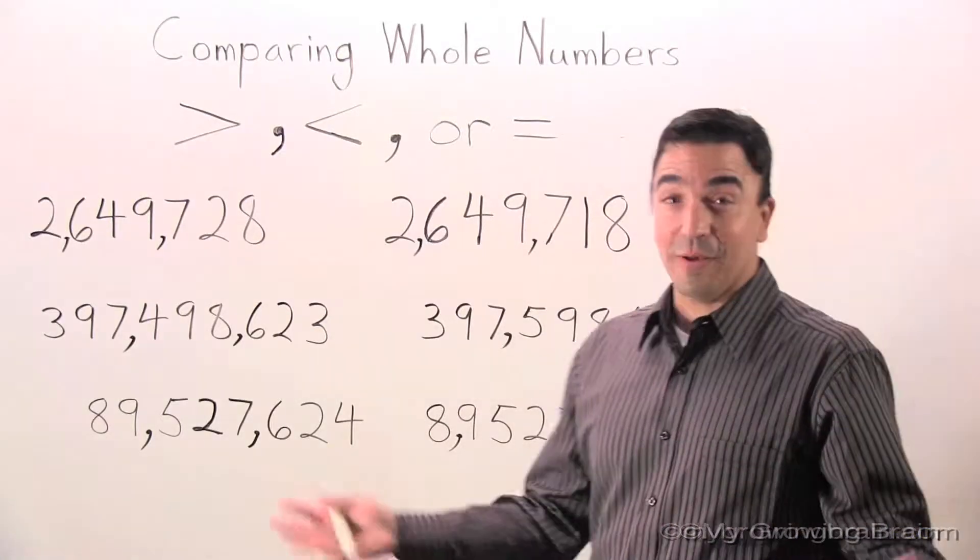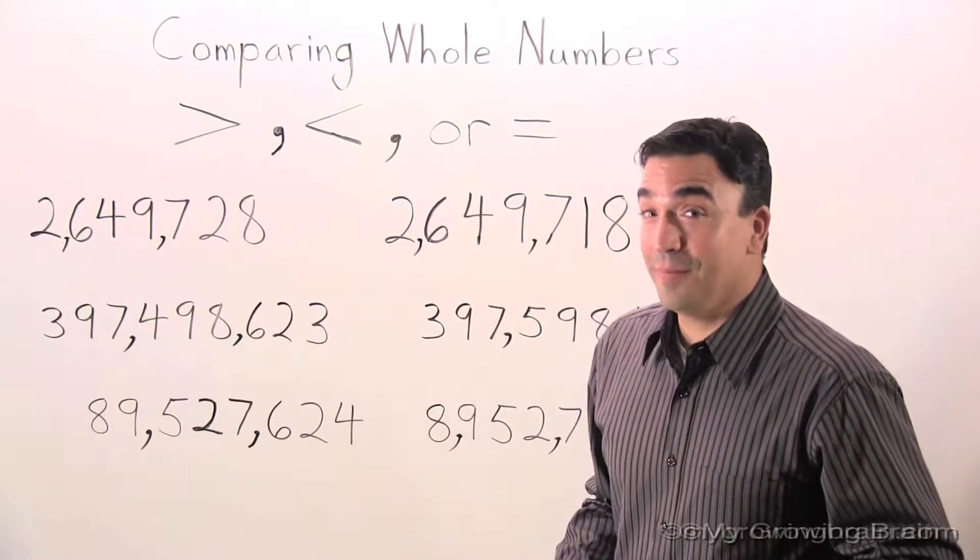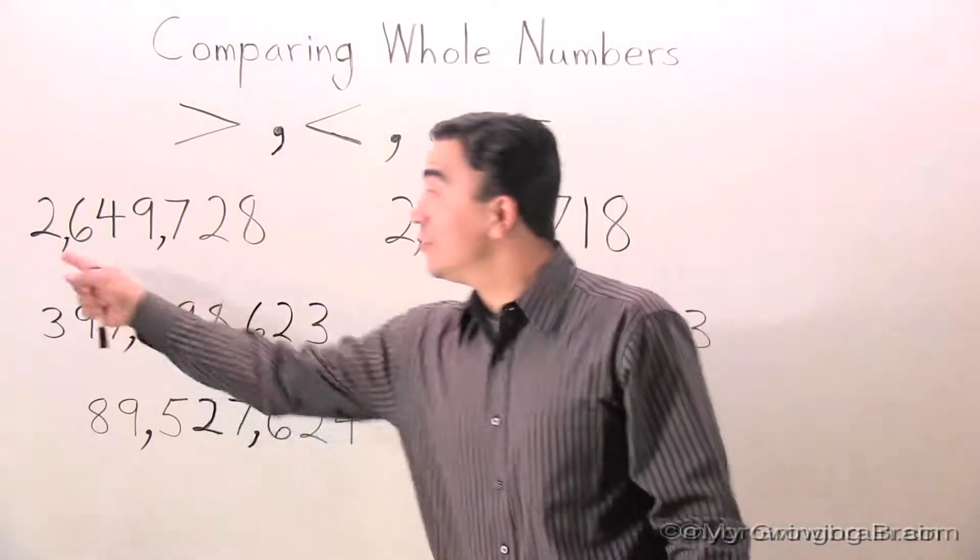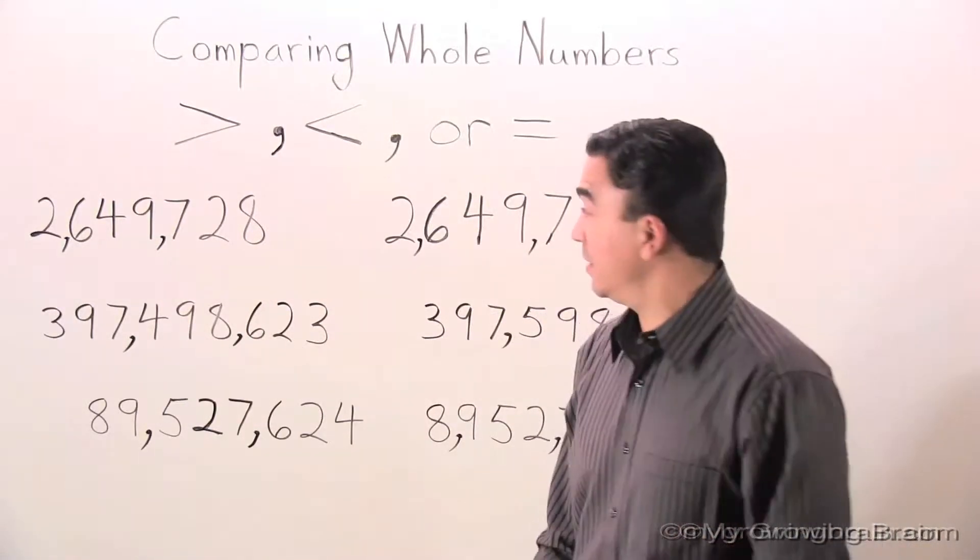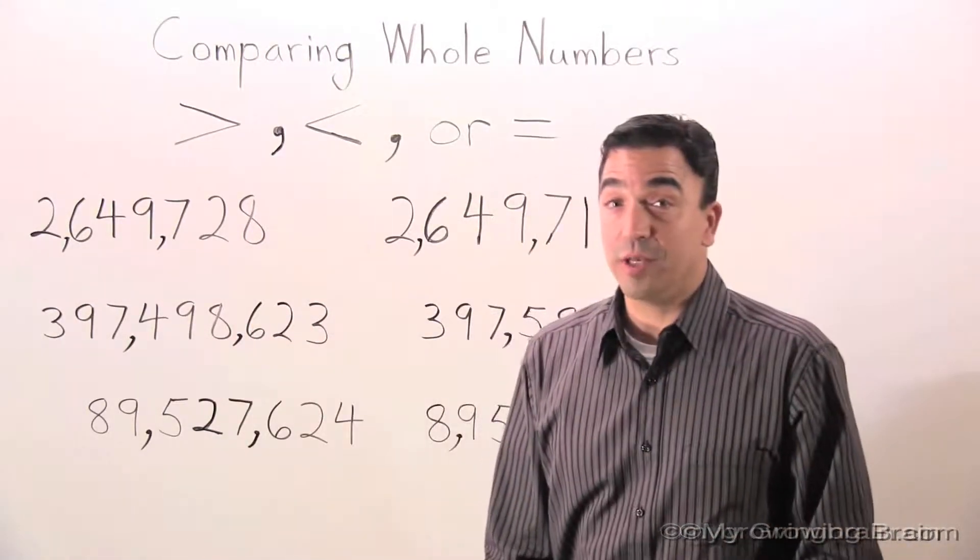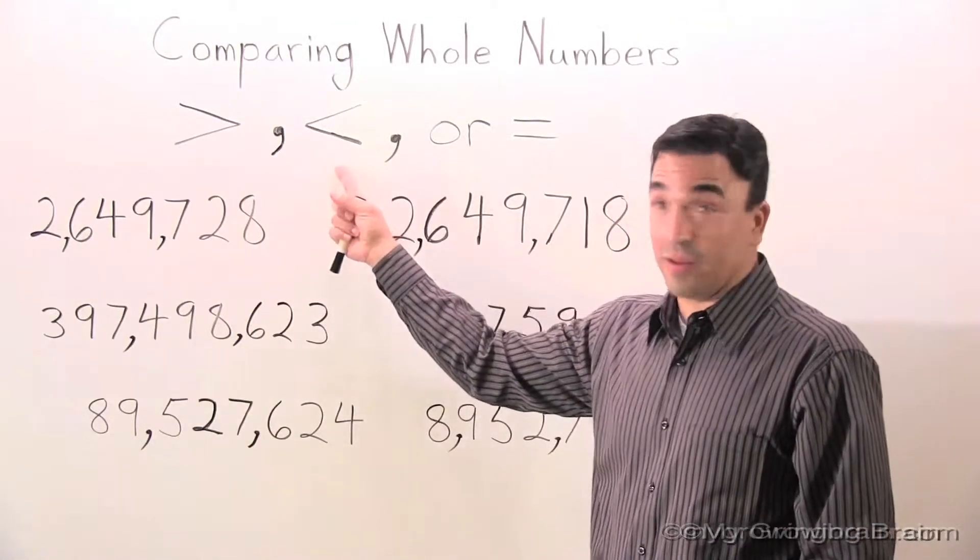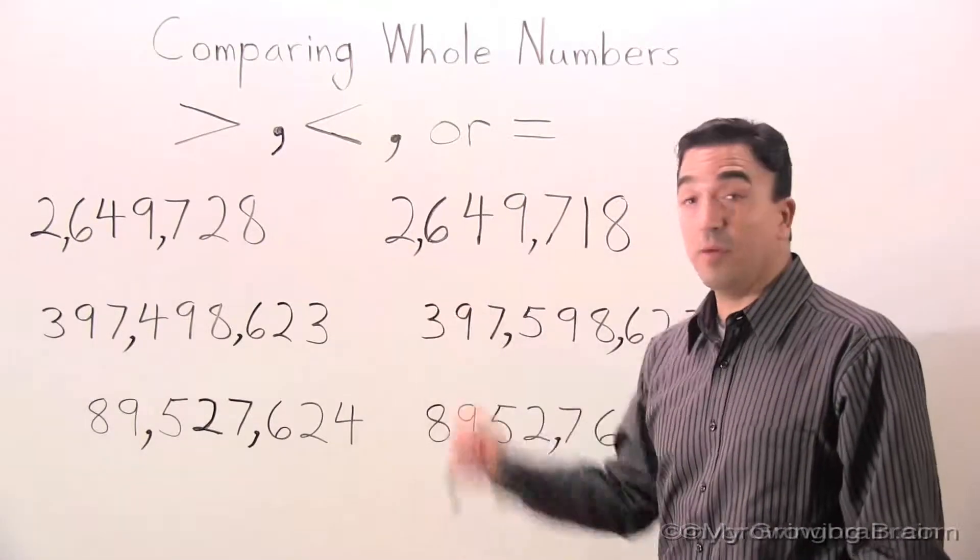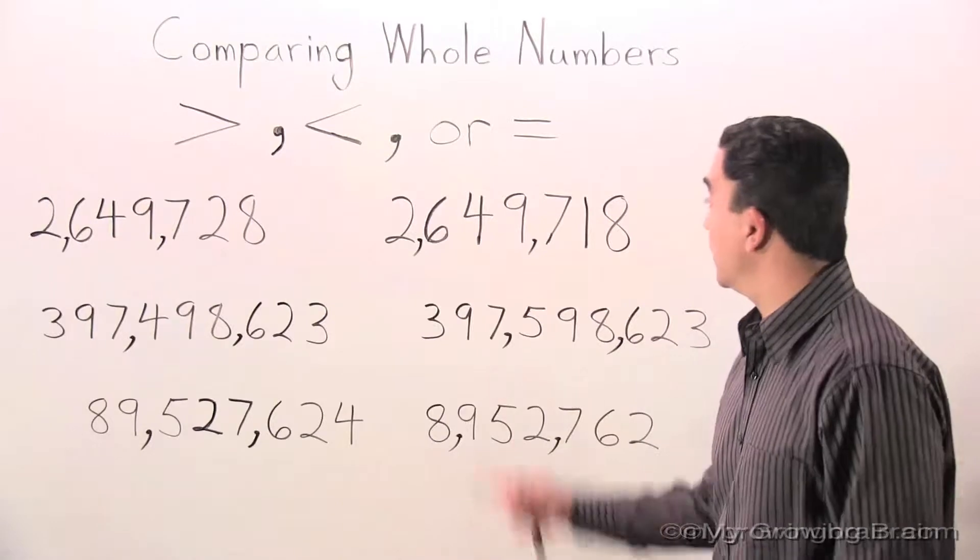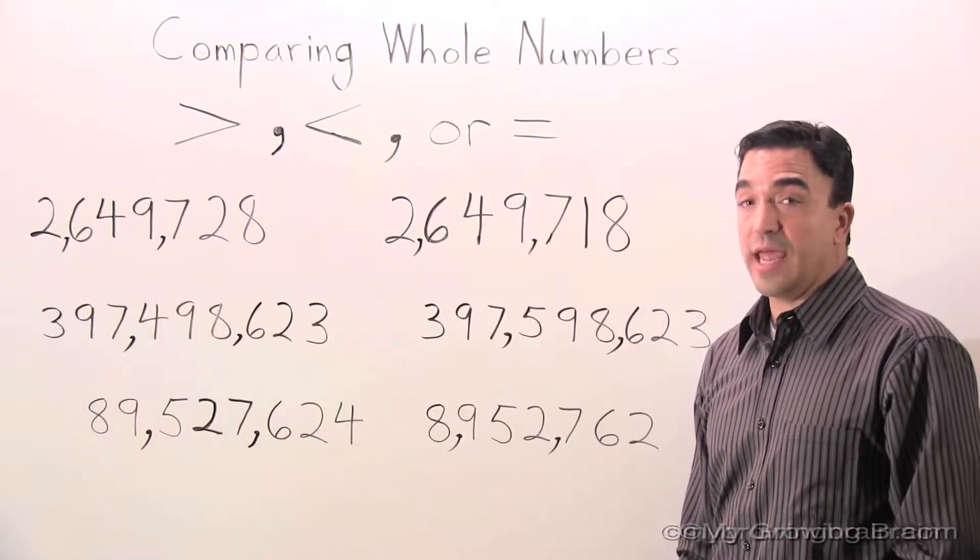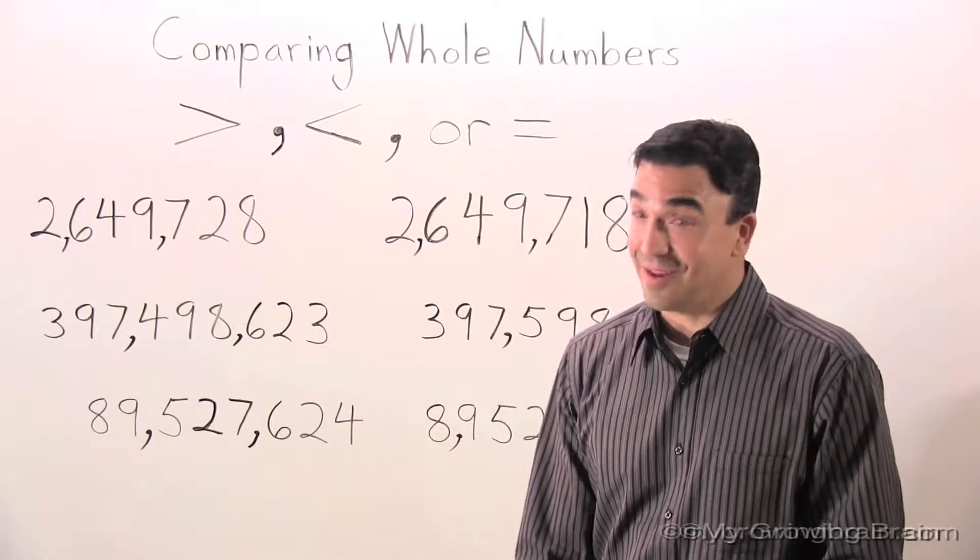I think we're ready to get started. Here's my question for you. Is 2,649,728 greater than, less than, or equal to 2,649,718? That's a lot of digits there.